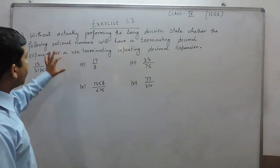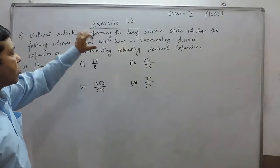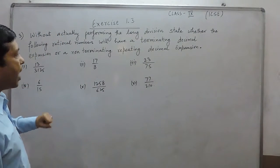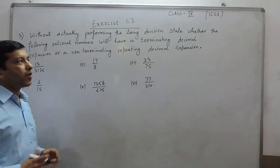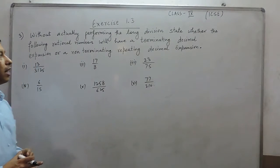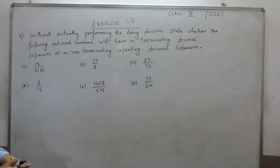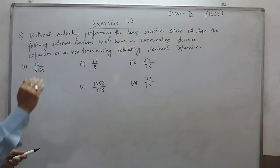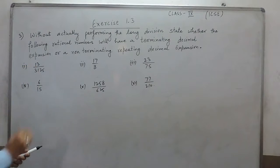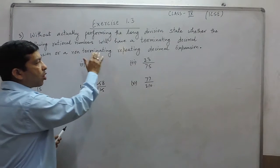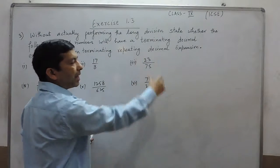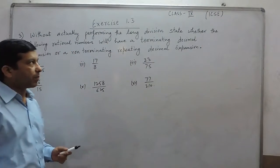Hello everyone. As we have already solved question number 2, we have understood that there are two types of decimal expansions possible: one is terminating decimal expansion and the other is non-terminating repeating decimal expansion.